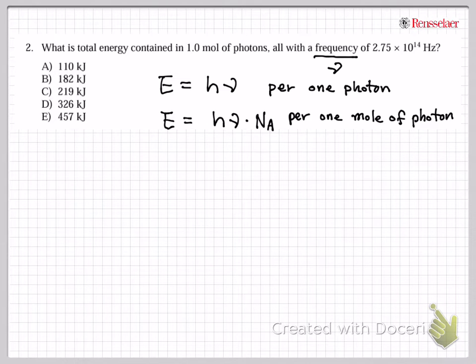This question is asking about one mole of photons, what is the energy? So E will be using Planck constant 6.63 × 10^-34, times frequency 2.75 × 10^14, times Avogadro's number 6.02 × 10^23. It's a pretty long calculation.